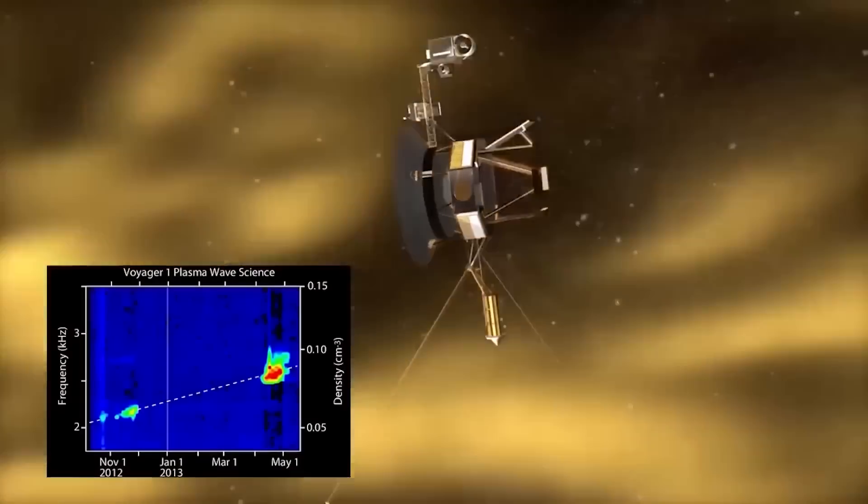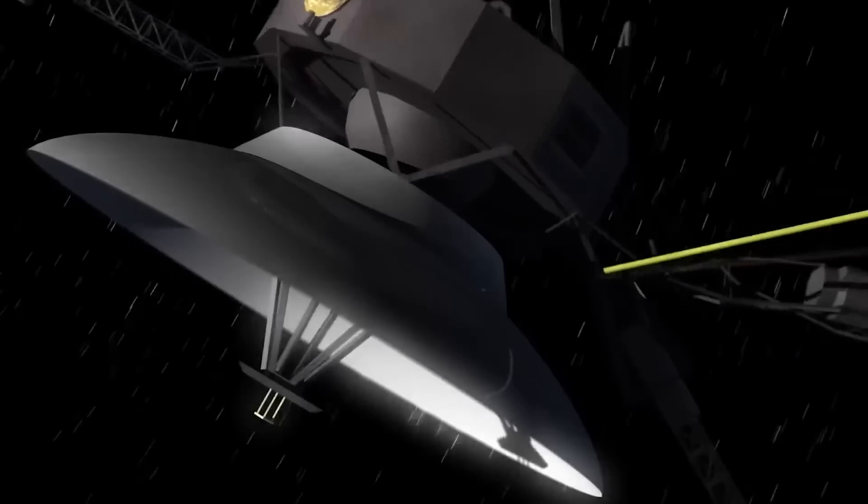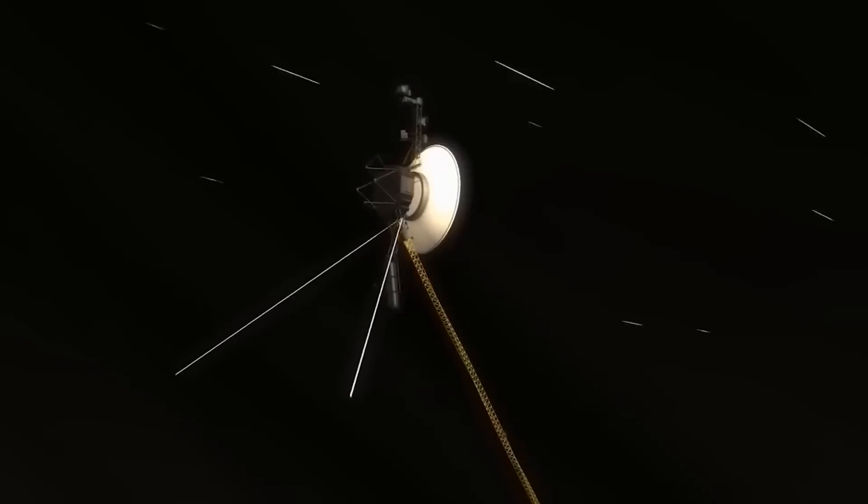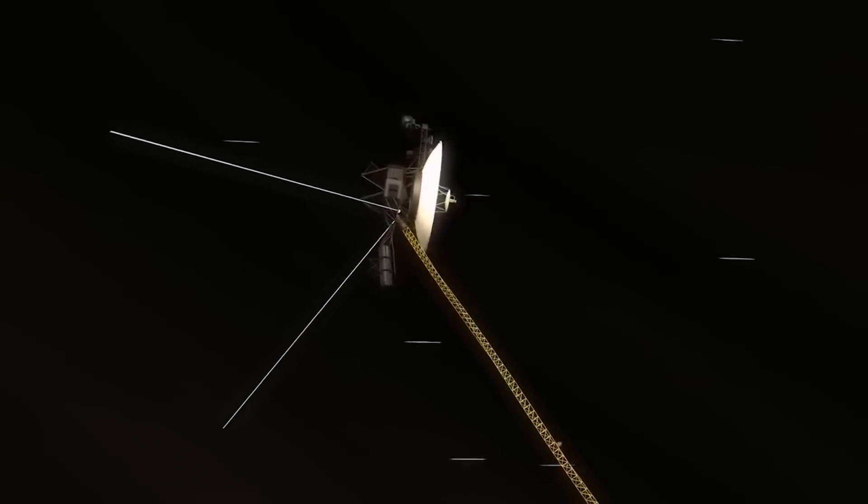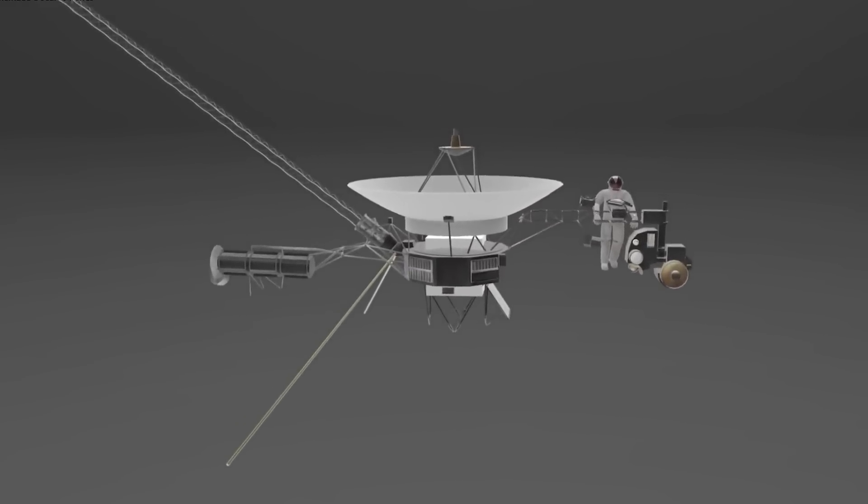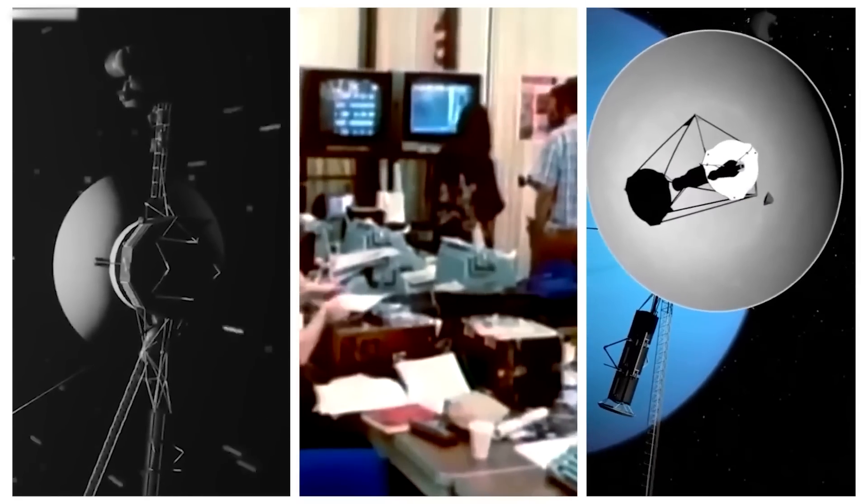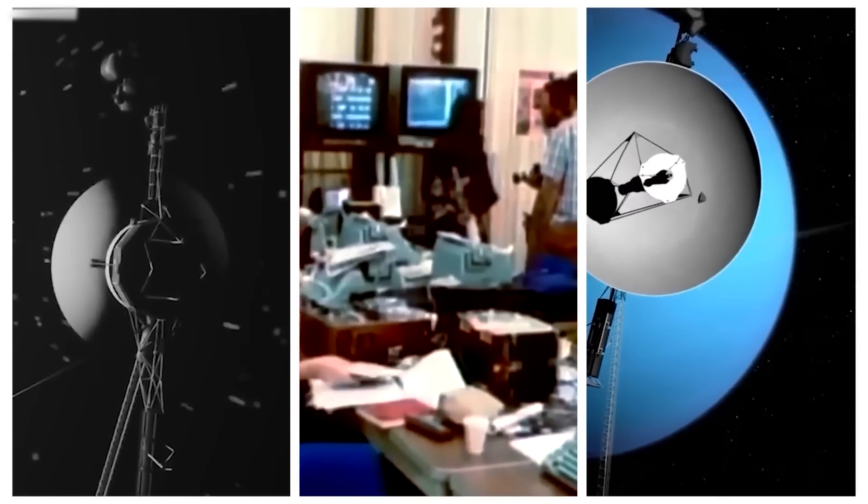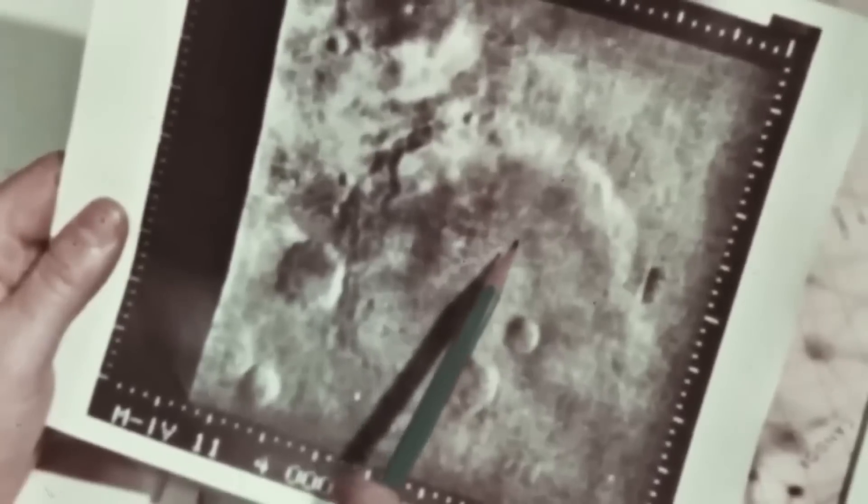The accumulation of dust on the instrument's optics or sensors can interfere with their functionality, degrading the quality of data obtained. Voyager 1 does carry a dust detector instrument specifically designed to measure the density of interstellar dust, but it still faces challenges in mitigating the effects of dust accumulation.